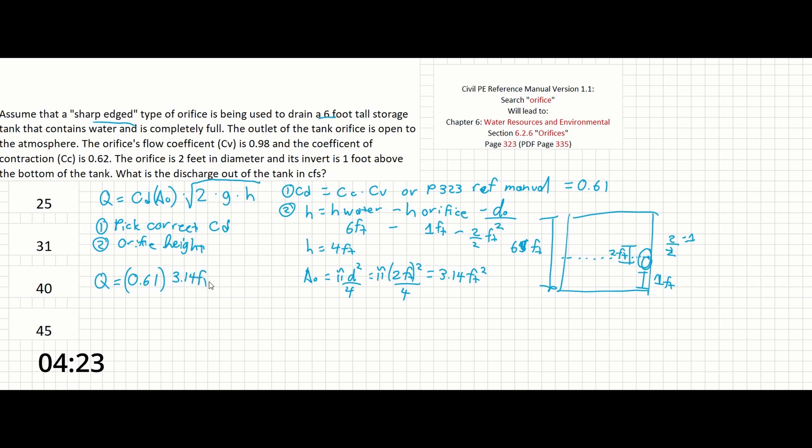So 3.14 feet squared times the square root of 2 times 32.2 feet per second squared, times 4 feet for our height. And if we calculate this out, we should get a flow rate of about 30.74 feet cubed per second or CFS.